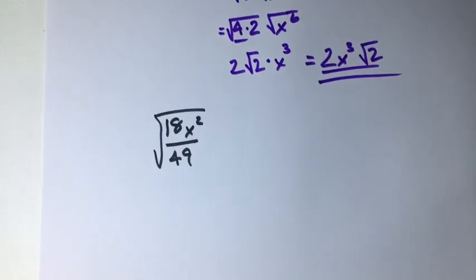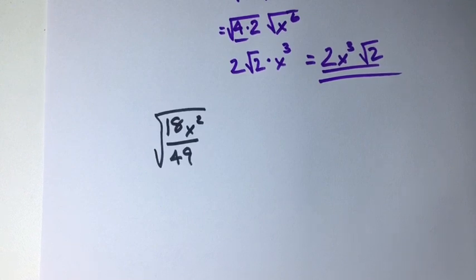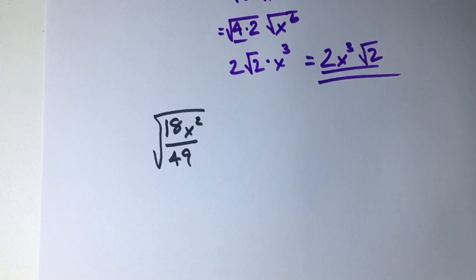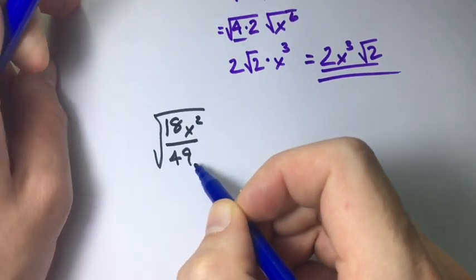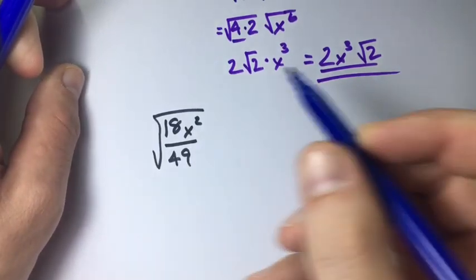Alright, in this example we have the square root of 18x squared divided by 49. Now this one we're going to do a little different. Let's split it up and take them apart this time because 49 is a perfect square so it'll be easier.